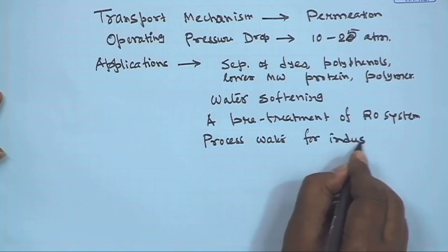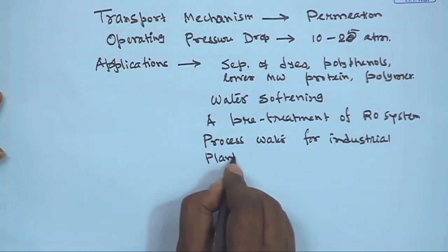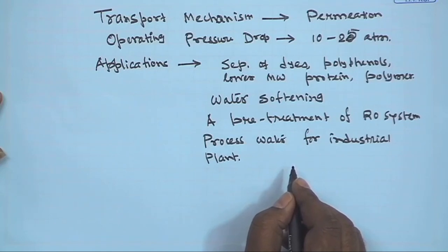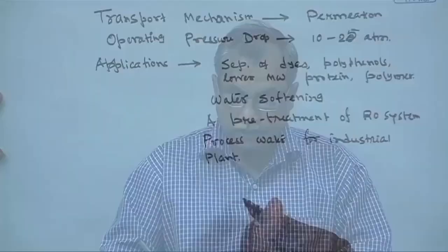Nanofiltration is also used to produce process water for industrial plants. If saline water is used as a utility stream in a plant, it causes corrosion of pipelines. Nanofiltration can be used for softening to remove salts, calcium, and magnesium, so that deposition and scaling of pipelines is reduced. So nanofiltration has quite different and varied applications.